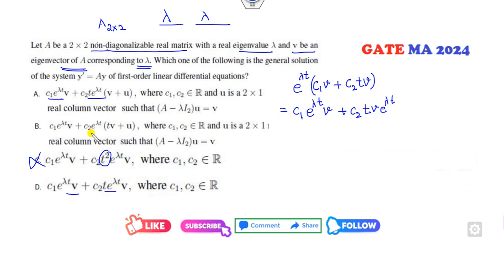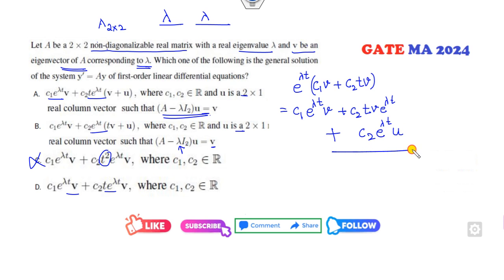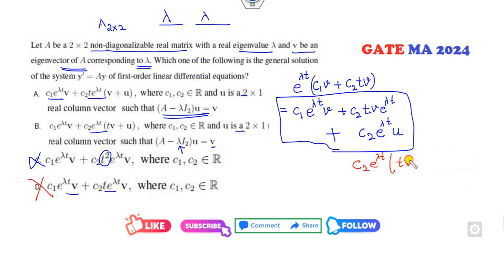Now, u is defined as the solution of the related equation, again corresponding to eigenvalue λ and eigenvector v. The complete solution is: c1·e^(λt)·v + c2·e^(λt)·(tv + u). Taking c2·e^(λt) common gives (tv + u), and the c1 term gives e^(λt)·v. We need this specific form, so the right answer is option B.